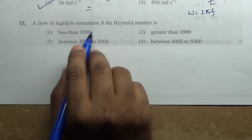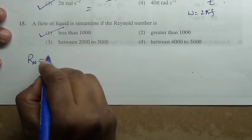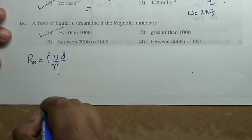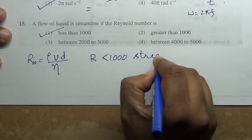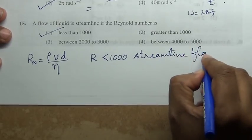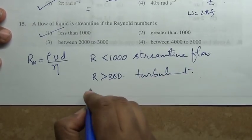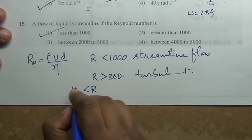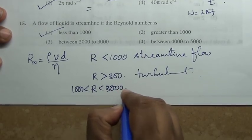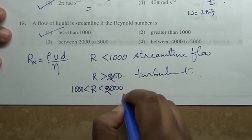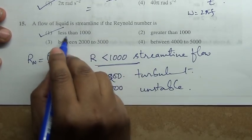A flow of liquid is streamlined if Reynolds number is less than 1000. Reynolds number is given by rho v d by eta. If Reynolds number is less than 1000, then it is streamline flow. Reynolds number is greater than 3000, then it is turbulent. Reynolds number is between 1000 and 2000, then it's unstable. So here it is streamline, less than 1000.